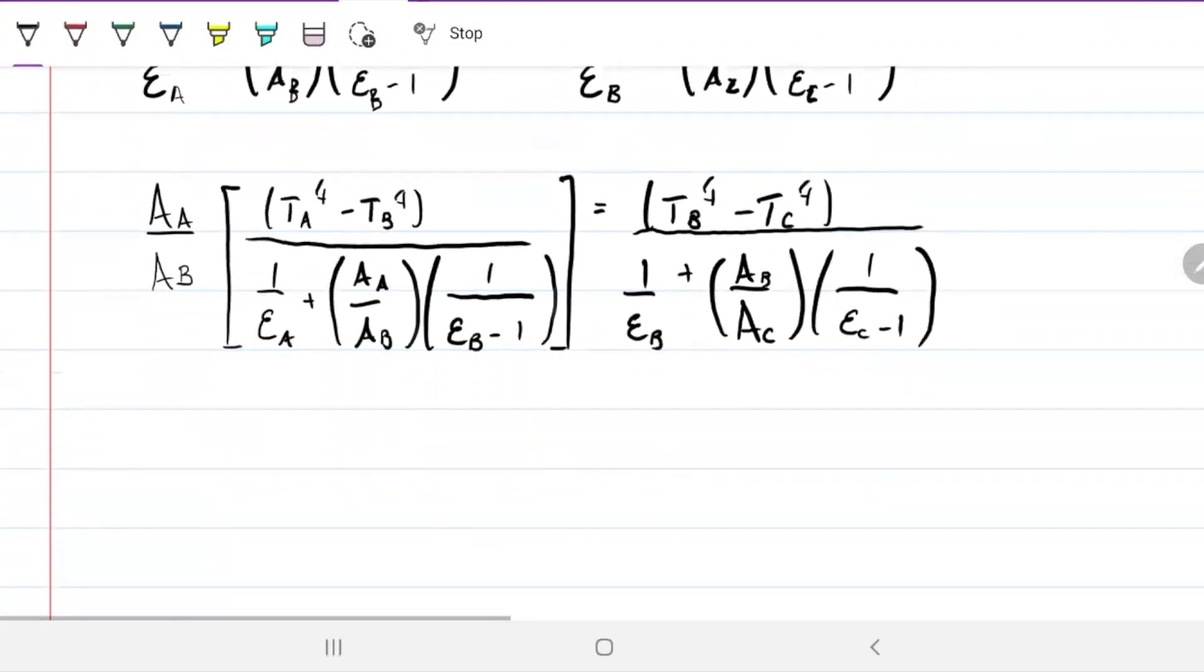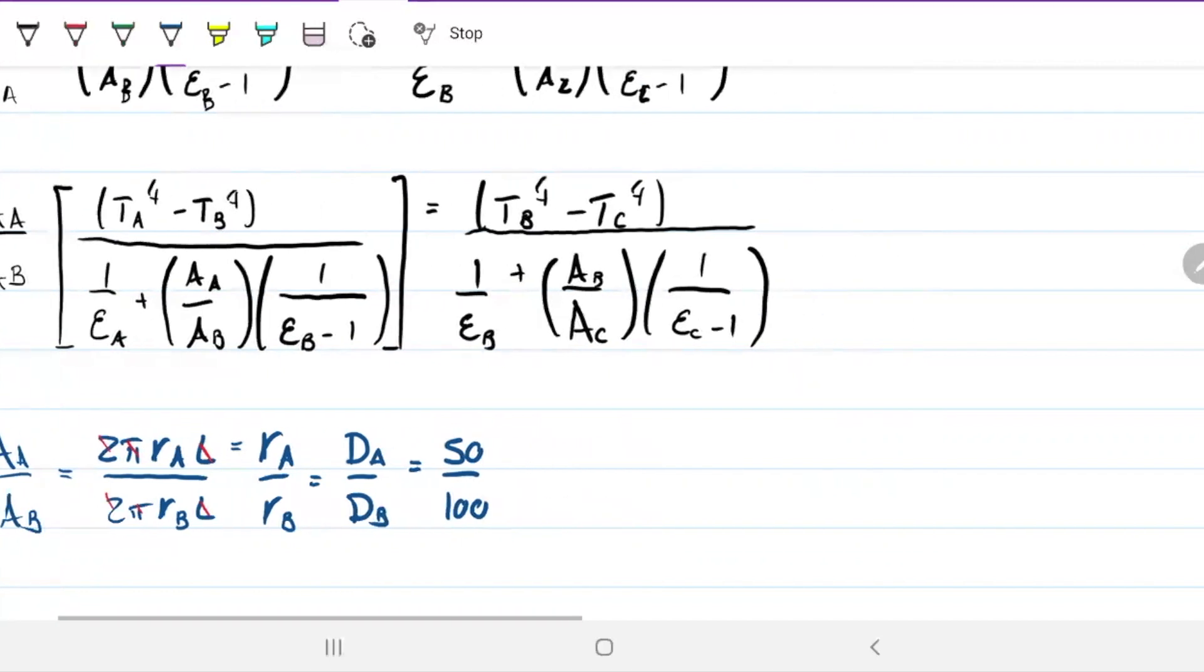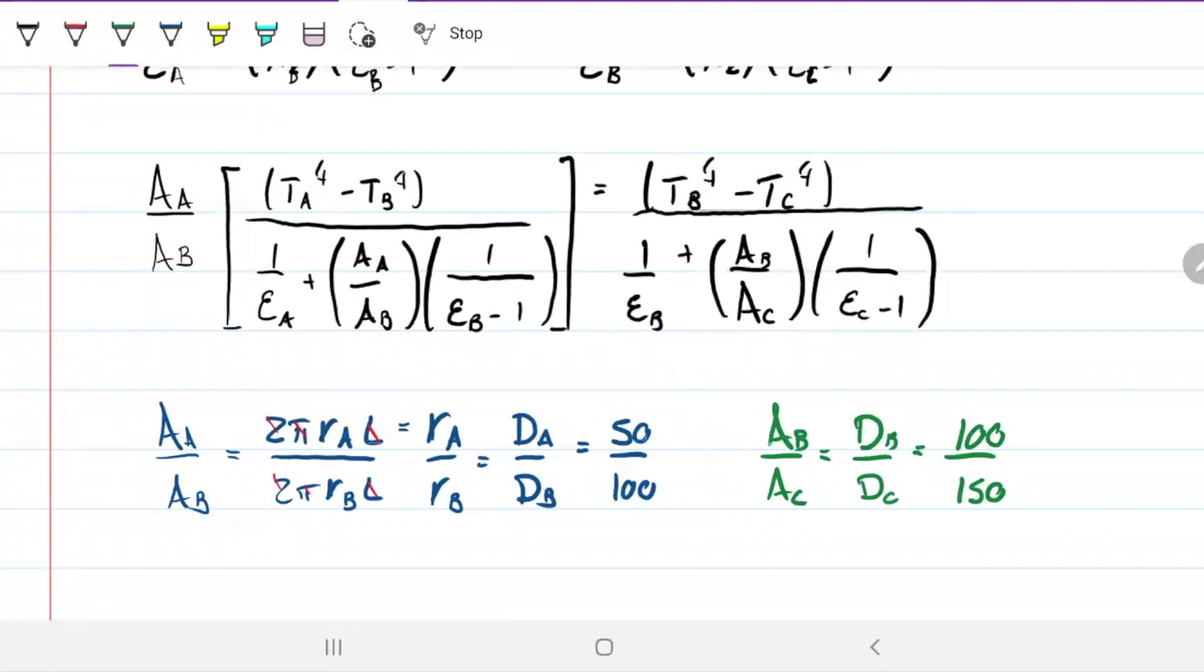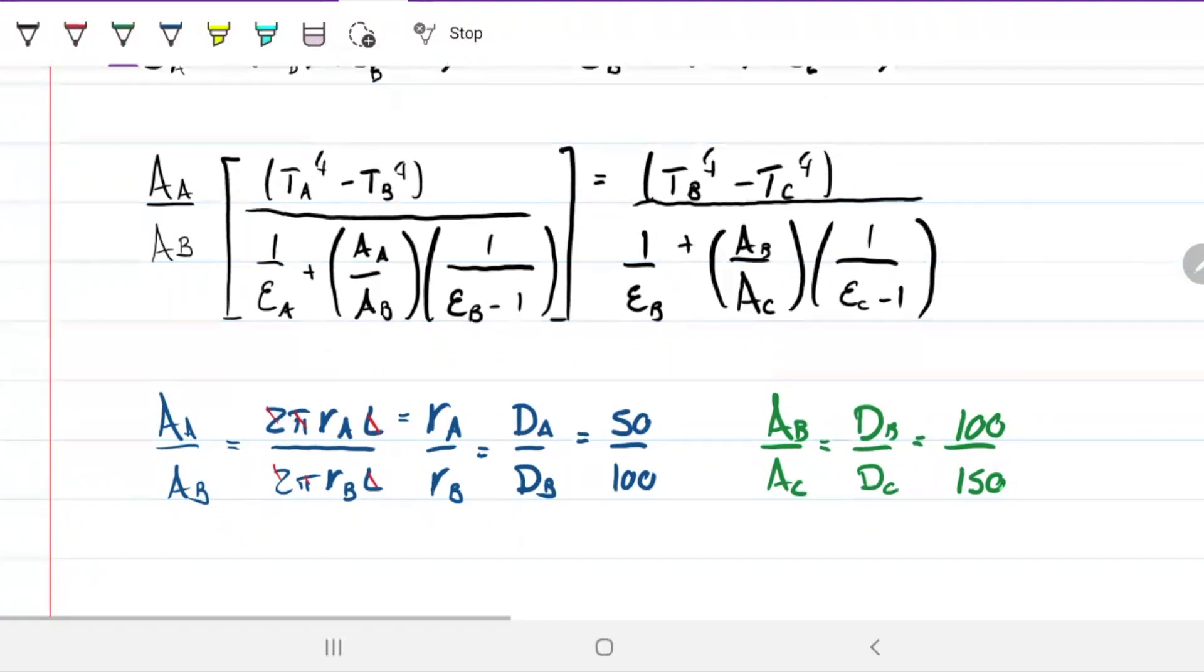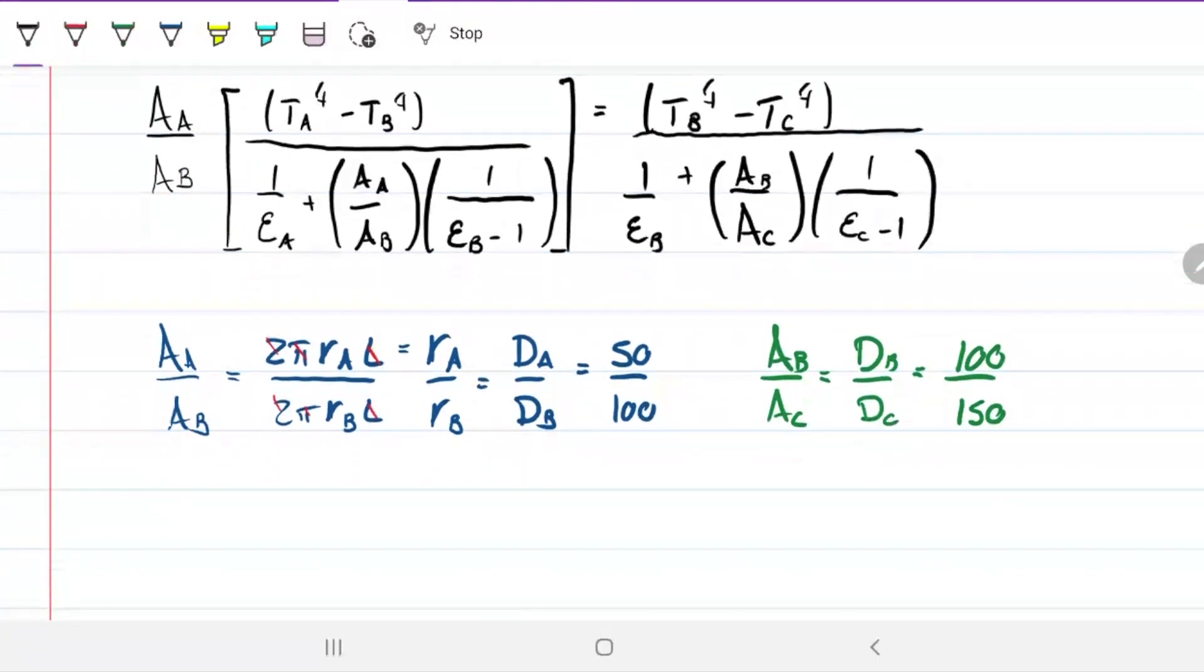Now, I want you guys to note that the area of A divided by area of B for a cylinder is 2 pi R_A times L divided by 2 pi R_B times L. Having the same length and pi and two being constants, this is the same thing as radius of A over radius of B, which in turn is the same thing as diameter of A over diameter of B. In this case here, diameter of A is 50 mils, and diameter of B is 100 mils. So this is just 0.5. Likewise, area of B over area of C, that would just be the diameter of B over the diameter of C: 100 divided by 150.